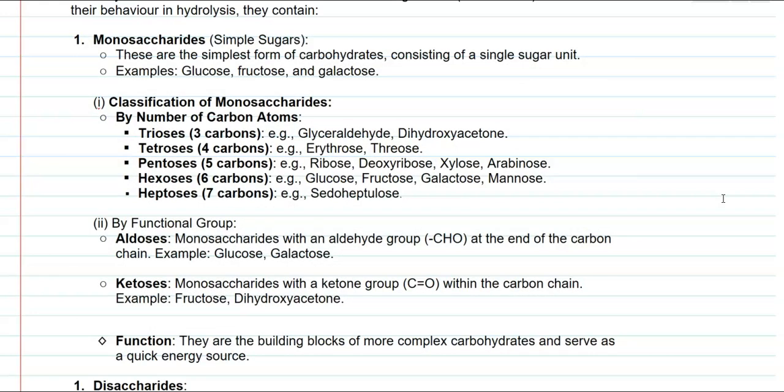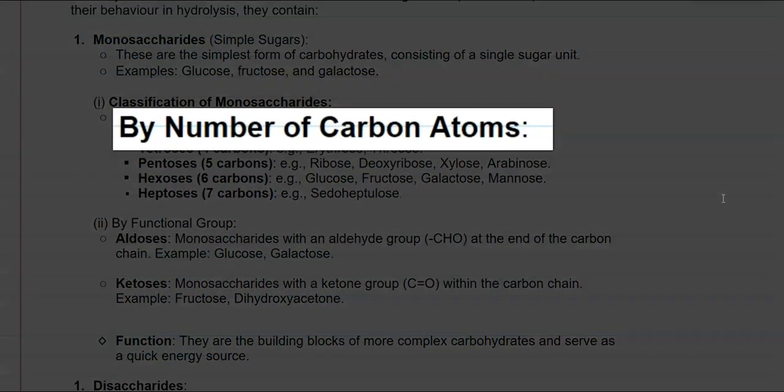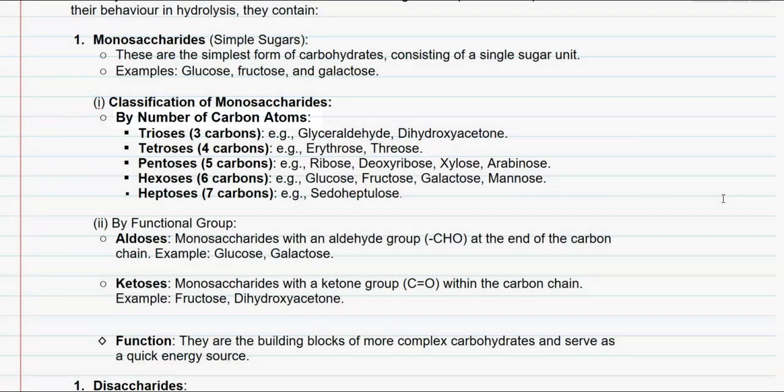Next, we look at the classification of monosaccharides based on the number of carbon atoms present. On this basis, they are divided into trioses, which contain three carbons. Examples are glyceraldehyde, an aldehyde sugar, and dihydroxyacetone, a ketone form of sugar. The next one is tetrose, containing four carbons, with examples being erythrose and threose.